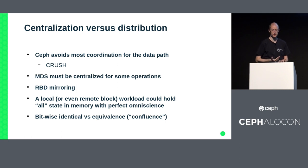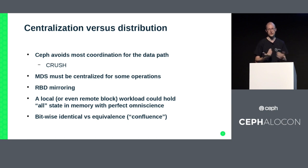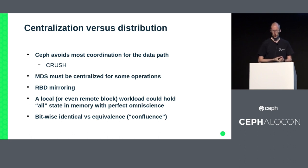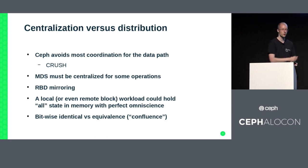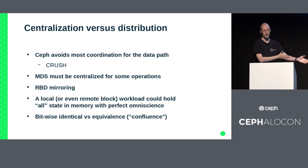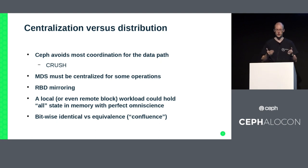There's another trade-off: centralization versus distribution. Centralization is very efficient but doesn't scale. Distributed modes of decision making are less efficient but scale. Ceph avoids most coordination for the direct data path - that's what Crush is about. Each client node can compute which OSD has that block and directly connect to the OSD that holds your data, without going through a single gatekeeper. Ceph is what we'd call a client-cluster protocol, versus traditional NFS or iSCSI which are client-server protocols.